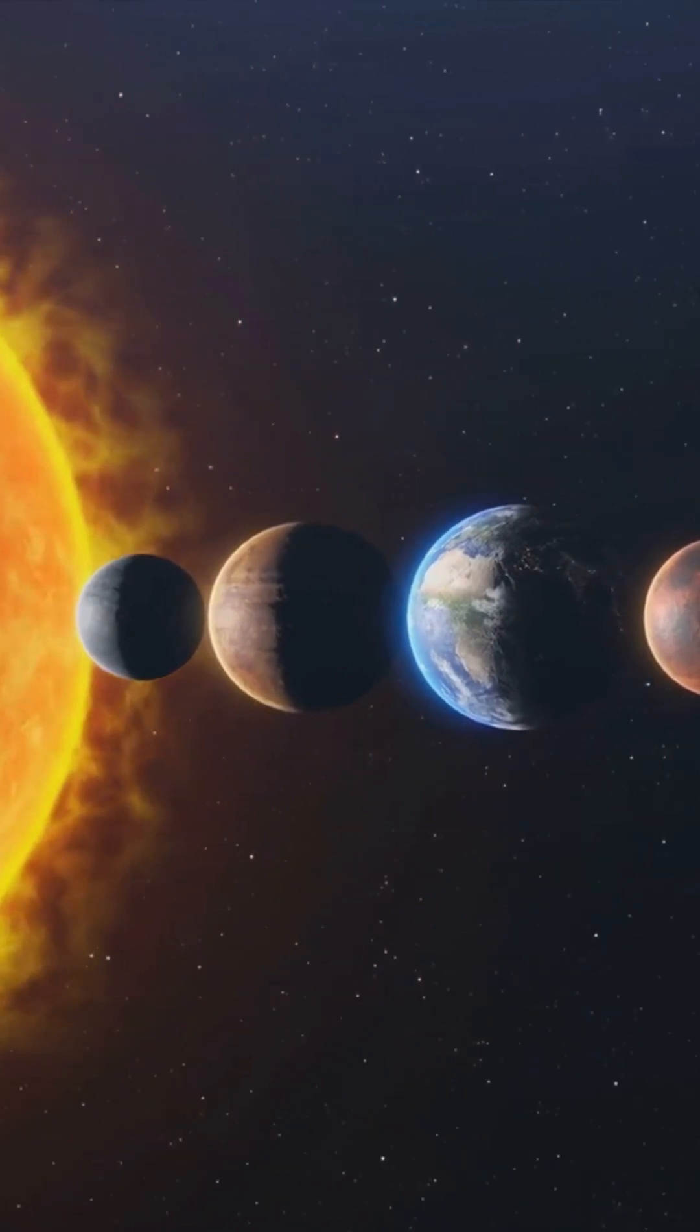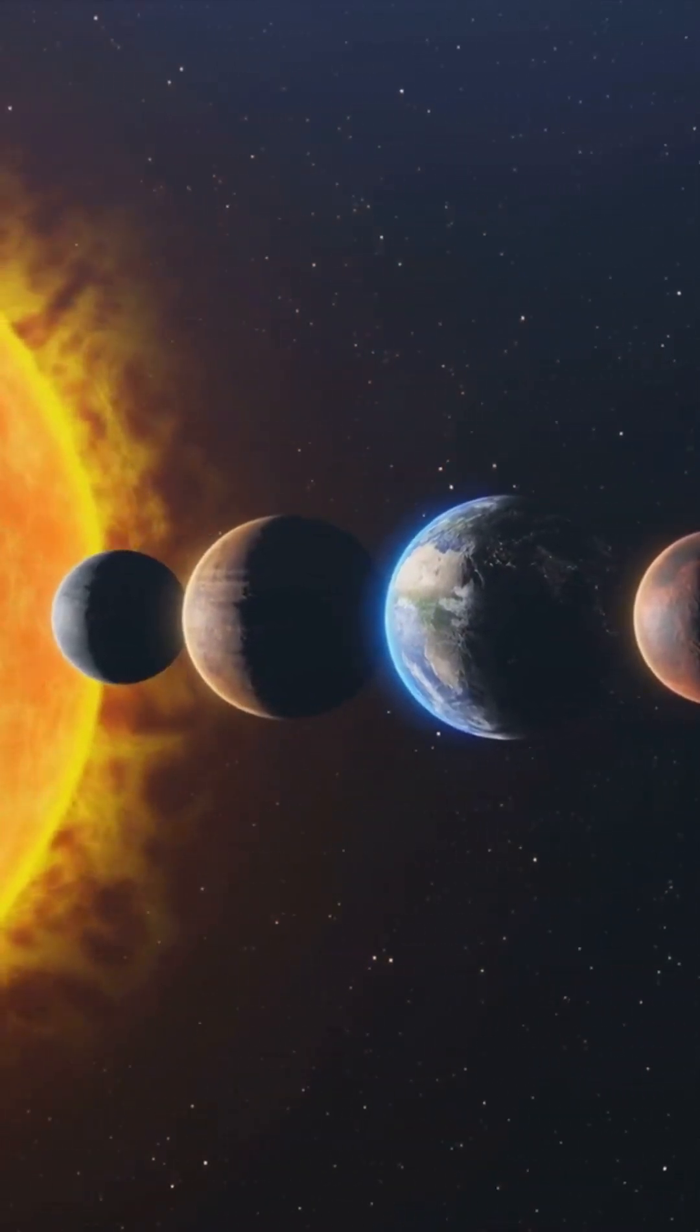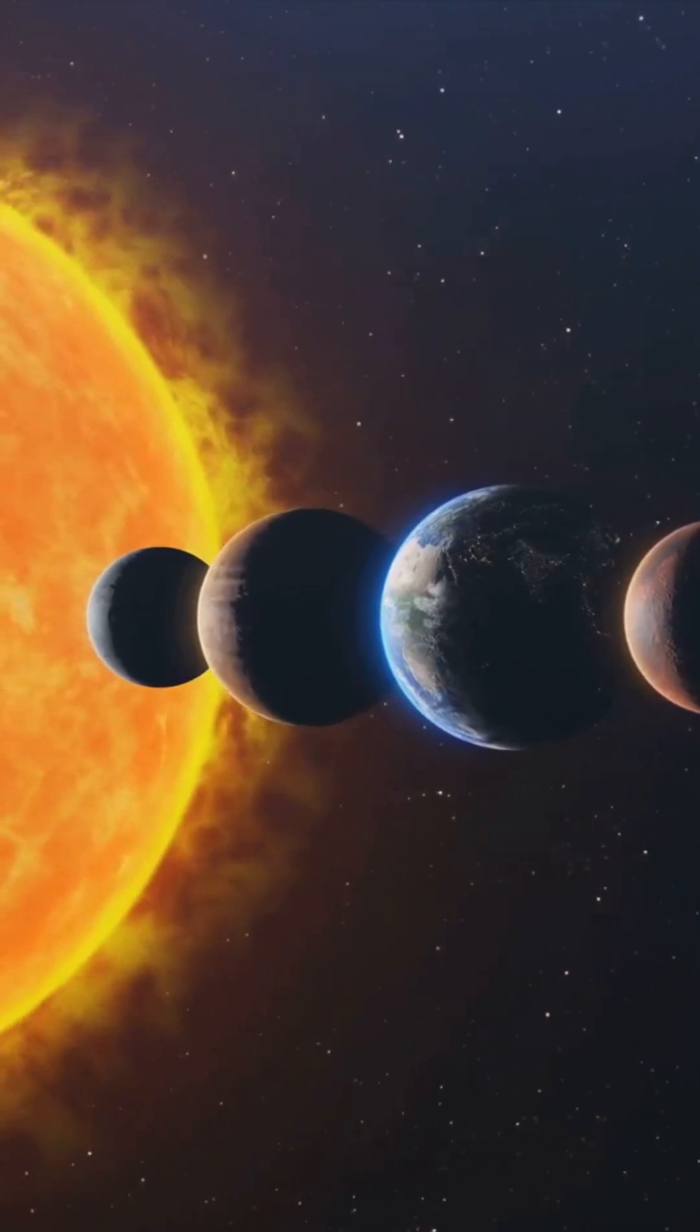Technically, out of all of the planets in our solar system, Venus gets the closest to the Earth, but it is not always this close.